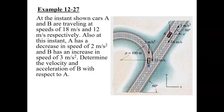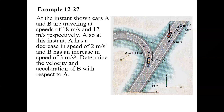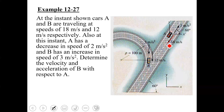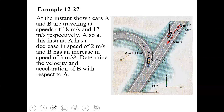Moving on to the next example, which is example 12-27. These examples are similar to those we have already solved. We have two particles — two cars A and B — travelling with the kinematics as shown. Car A is travelling with a speed of 18 meters per second, decelerating at a rate of 2 meters per second squared, along a straight line road at 60 degrees with respect to the positive x-axis.